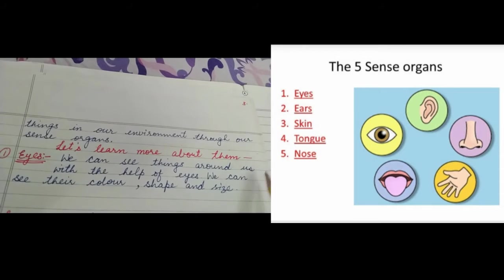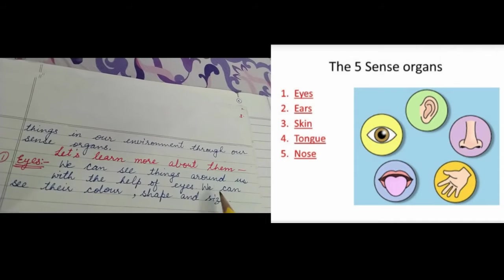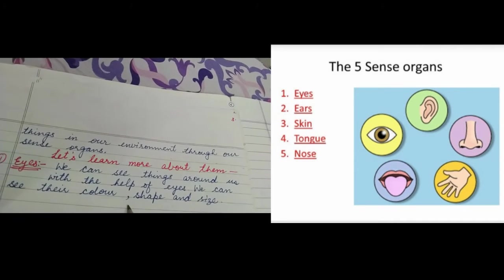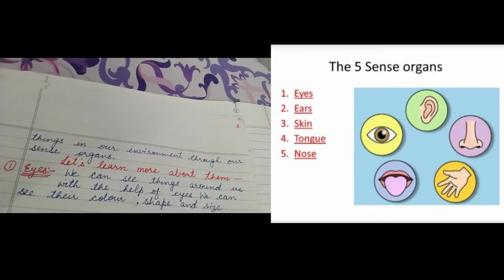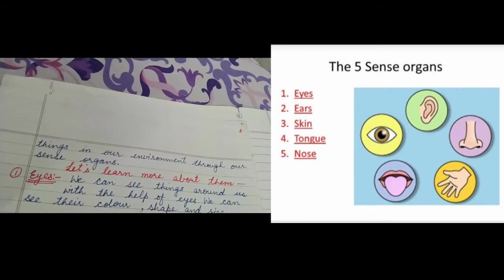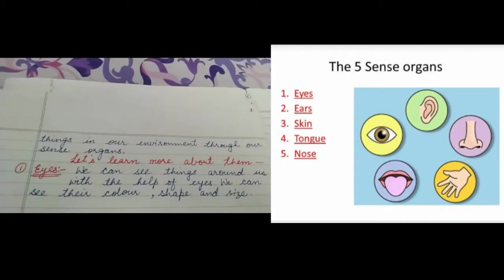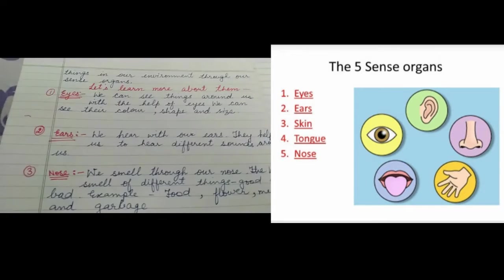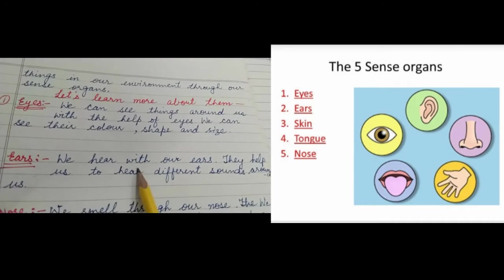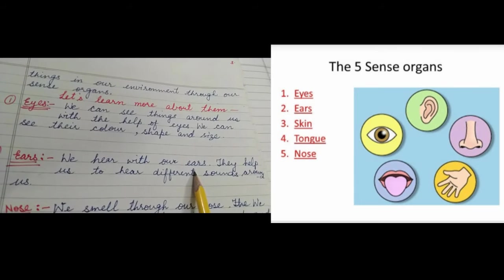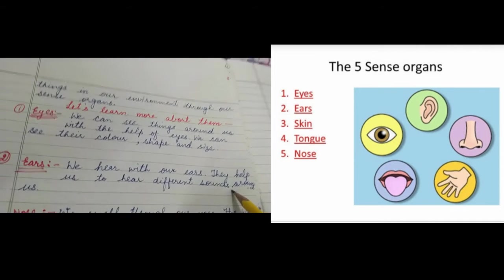First, eyes. We can see things around us with the help of eyes. We can see their color, shape, and size, and identify what a thing is. We get information through our eyes. Next, ears. We hear with our ears, and they help us hear different sounds around us, like a phone ring, TV sound, or doorbell.